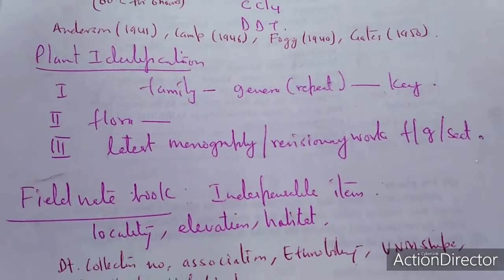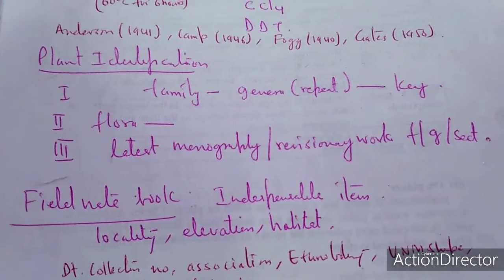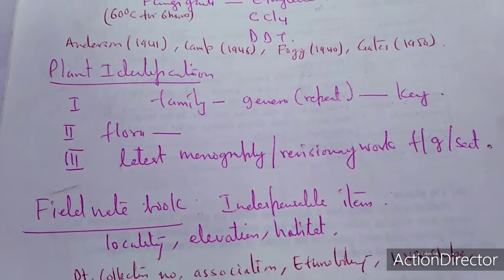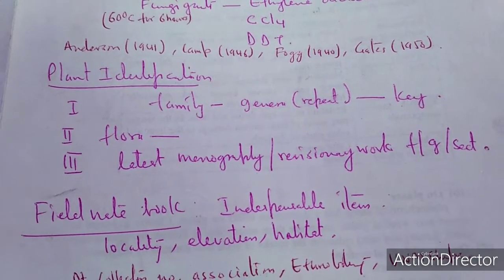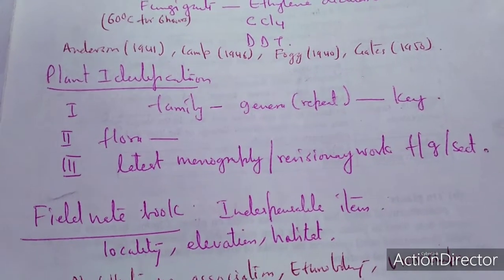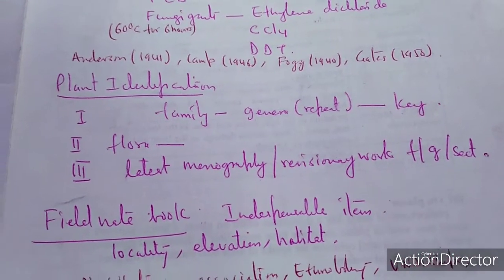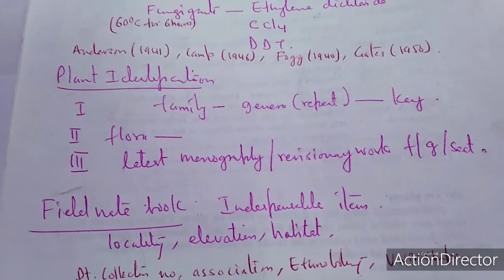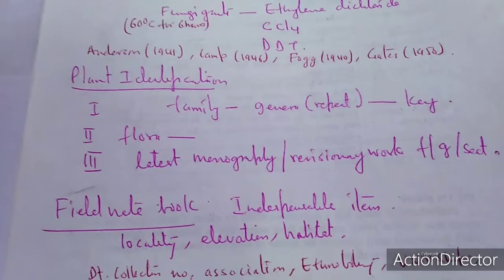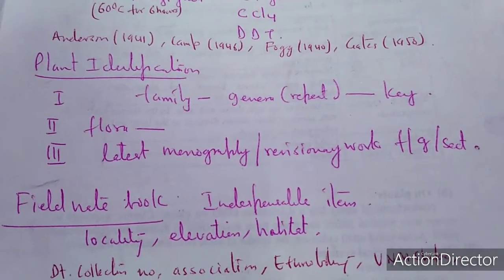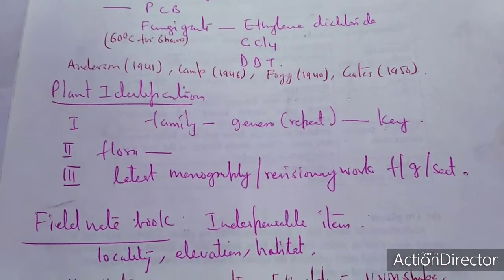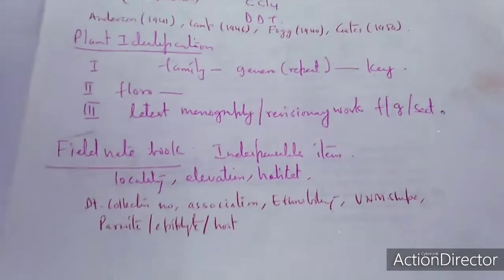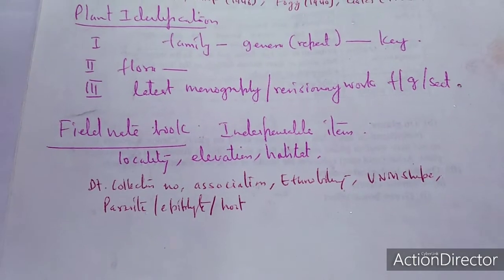Once the herbarium has been prepared, plant identification can be done by going to the family, then genera — genera can be repeated many times — then we may go to the species. A key formula is formulated. Another tool that helps in identification is the flora. The flora is a systematic as well as comprehensive study of a particular place. The latest monograph and revisionary work can also be used, along with family, genus, and section-level methods for character identification.